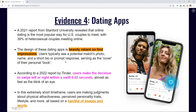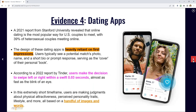The last piece of evidence is the rise of dating apps. Studies found they are heavily reliant on first impressions. According to a 2022 report by Tinder, users make the decision to swipe left or right within 0.03 seconds — almost as fast as the blink of an eye. The same applies when people are browsing pages and products: you have a fraction of a second to make that first lasting impression.